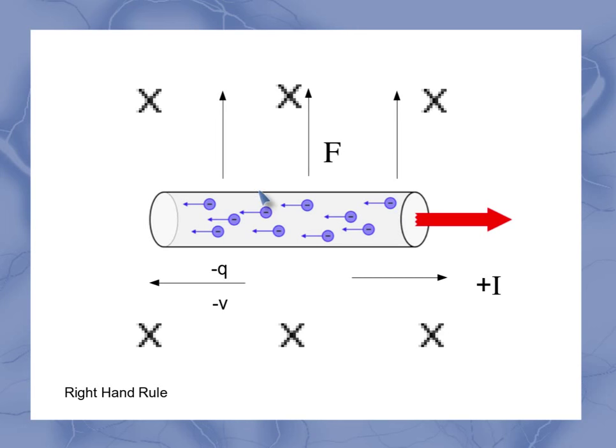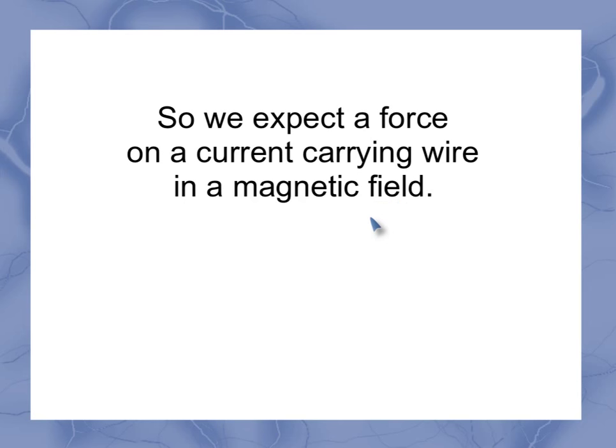But those electrons aren't allowed to move upwards. Instead, we have a whole force pulling up on our wire. So we expect that there's going to be a force on a current-carrying wire in a magnetic field.